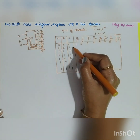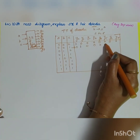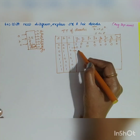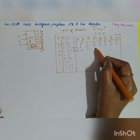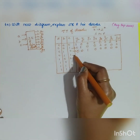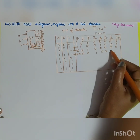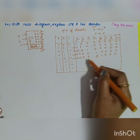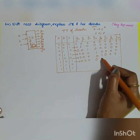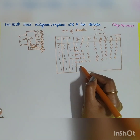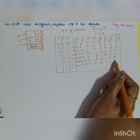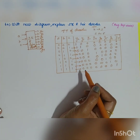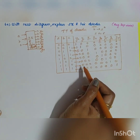For input 000, Y0 is 1 (all others zero). For 001, Y1 is 1. For 010, Y2 is selected. For 100, Y4 will be 1. For 101, Y5 will be 1. For 110, Y6 will be 1. For 111, Y7 will be 1. This completes the truth table of the 3-to-8 line decoder.